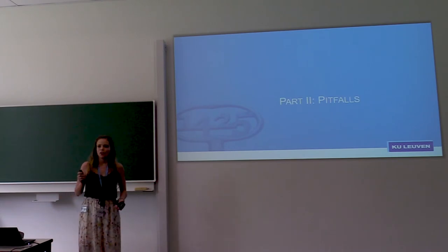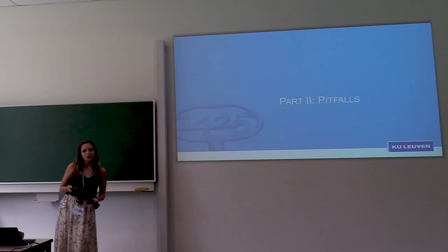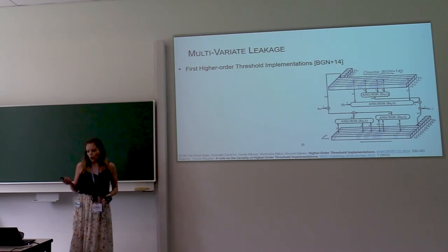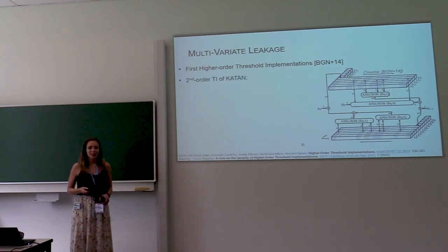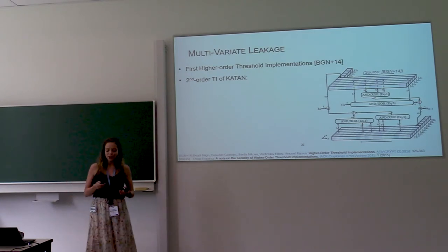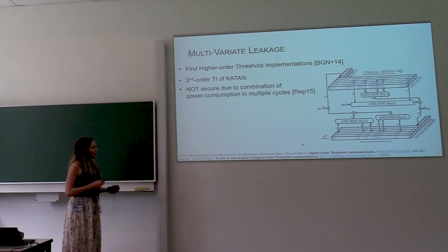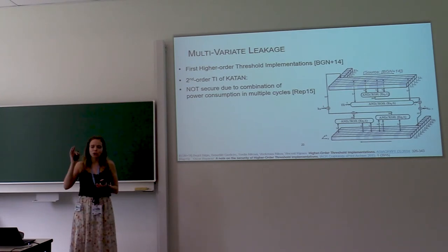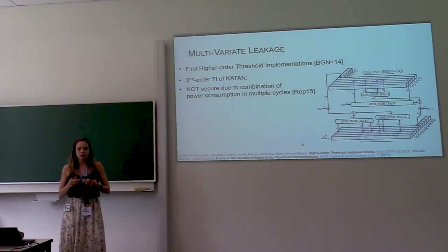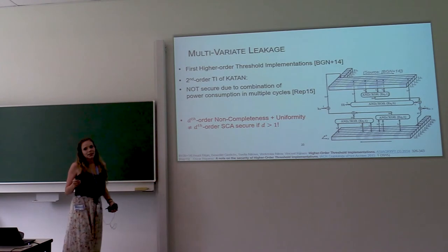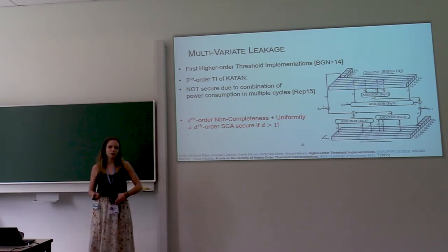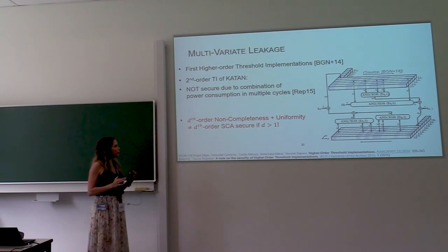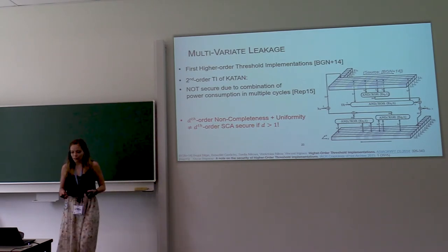Those are the references. Now, if you find yourself trying to make a masked implementation yourself, then there are a number of pitfalls that you want to avoid. For example, the very first high order threshold implementation was a second order secure threshold implementation of the KATAN cipher. Or rather, it was supposed to be second order secure, but after a year, it was realized that it wasn't because of multivariate leakage. So that means that if you combine the power consumption of two different clock cycles, then you have leakage of the secret. So at this point, it was realized that d-th order non-completeness and uniformity don't give you security against d-th order statistical analysis. This is only true for first order. So the situation for higher order security is a lot more complex than first order security.